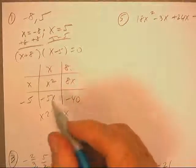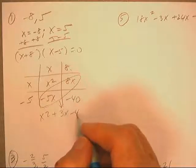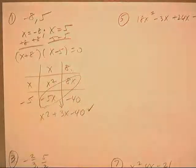x squared plus 3x minus 40. Ding. We're good on that one. We'll be back.